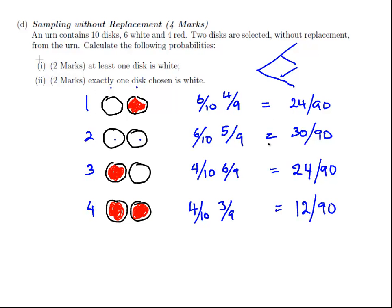This gives us very good coverage of what we need. Now, the first question is, at least one disk is white. Well, if you look at it there, you can see pretty clearly the probability of at least one disk is white is scenario 1, scenario 2, plus scenario 3.